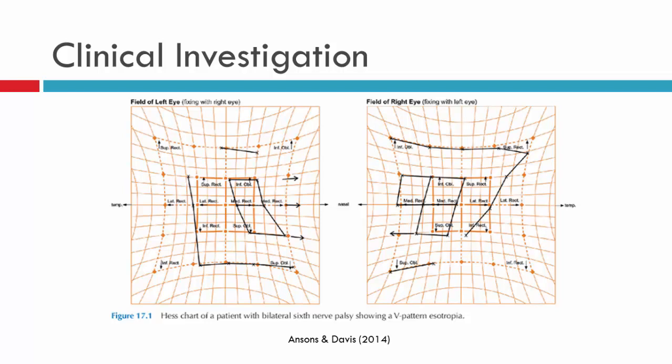Anthon's and Davis has indicated this is a bilateral 6 with a V pattern diagnosed. Generally, when looking at HES charts, I take the V pattern from the primary deviation. In this instance, the primary deviation of the smaller field is the right eye, which is why I was measuring off the right eye.